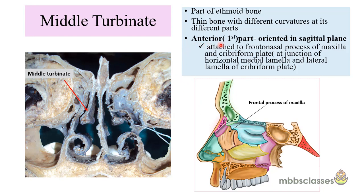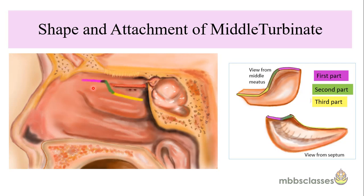The anterior most part is oriented in the sagittal plane. Here the middle turbinate is attached to the frontonasal process of the maxilla and to the lateral lamella of the cribriform plate, which is a part of the ethmoid bone. After running for a certain distance in the sagittal plane, the middle turbinate turns laterally, is then arranged in a coronal plane, and is attached to the lamina papyracea.